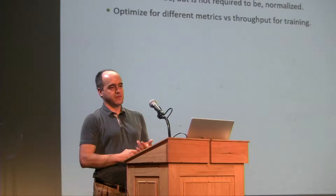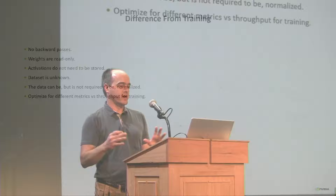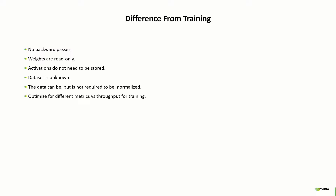The dataset is often unknown — it's not just a training set and a test set. You don't know what inputs you're going to get. You might know your domain, but not the actual inputs themselves. You usually don't have to normalize your data, and you're optimizing for different metrics. For training, it's mostly throughput — how fast can you push data through and do back-propagation.